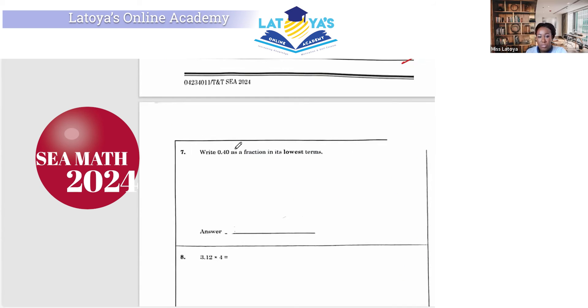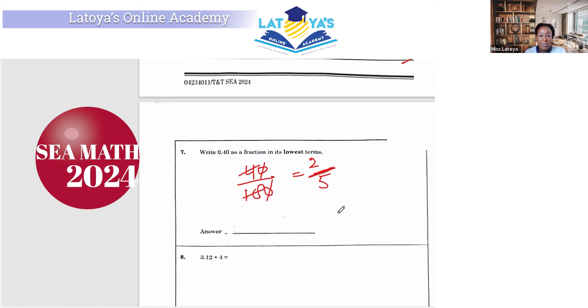Question 7, write 0.40 as a fraction in its lowest terms. 0.40 is 40 over 100. How can we reduce this? This 0 could cancel this 0, and we can say 2 into 4 is 2, and 2 into 10 is 5. So we have 2 fifths. 2 fifths is our answer.